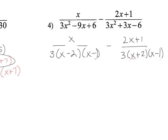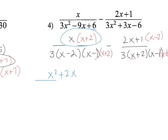What it's missing is x minus 2 on one side and x plus 2 on the other. So I'm going to multiply the first numerator by x plus 2 and its denominator by x plus 2, and multiply the second side by x minus 2 and x minus 2. So the numerator on the left becomes x squared plus 2x over 3 times x minus 2 times x plus 2 times x minus 1, minus...